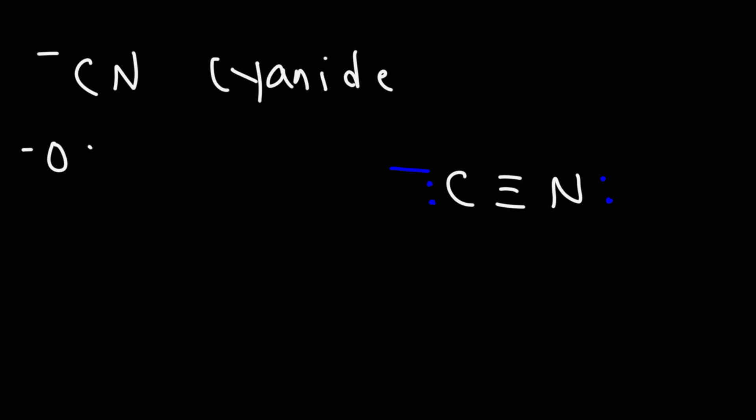Similar to that is cyanate. The carbon is in the middle, but this time it's attached to an oxygen. It's still triple bonded to the nitrogen. By the way, this is just one resonance form of cyanate. It does have other resonance forms where there's a double bond here and a double bond here. But this is the most stable out of the three resonance forms that cyanate has.